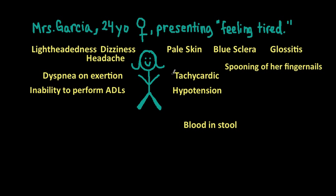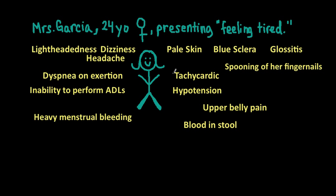Some specific symptoms related to conditions causing iron deficiency include blood in the stool, making it dark and tar-colored — you want to ask about that, but the patient may not realize she has blood in her stool, so it's important to also check her stool for hidden blood. She may also have belly pain if the iron deficiency is caused by a stomach or intestinal problem. Ask women about their menstrual cycle and whether they have heavy menstrual bleeding, which may be the cause. Lastly, a symptom called pica commonly presents in iron deficiency anemia — this is when people eat non-food material, such as ice, dirt, or paper.